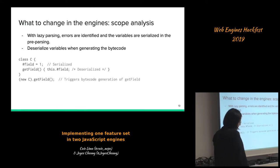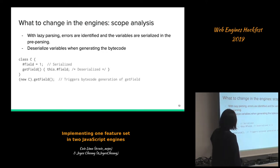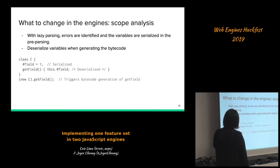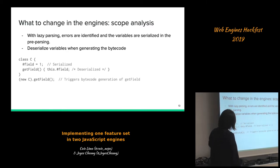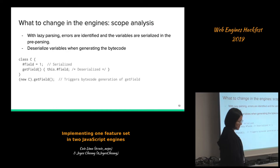Both JavaScriptCore and V8 have lazy parsing, where errors are identified and variables are serialized the first time parsing occurs. When we parse the class for the first time, the '#field' private name is serialized. We don't emit code for the function because we're lazy here — we only generate code for the method when it's actually invoked. At that point we need to deserialize the private names from the scope, which adds some complexity in the implementation of private names.